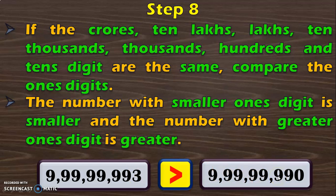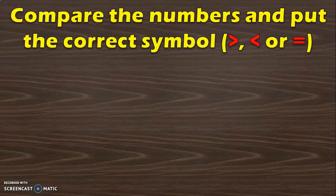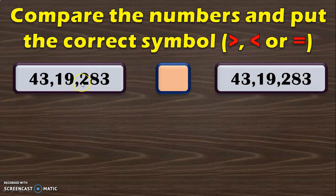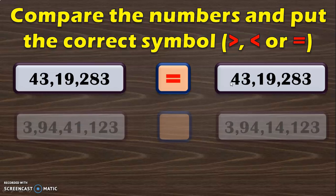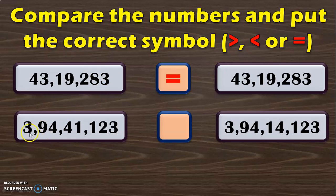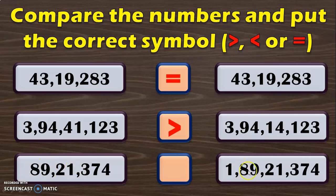Dear viewers, hope you are clear with the rules to compare the numbers. Only then you can put the correct symbols when you do the number activity. Here you have two 7 digit numbers which are of the same value — the symbol to put is the equal to symbol because both numbers are equal. Next, you have two 8 digit numbers where the crore's place, 10 lakhs place, and lakhs place are the same. So compare the 10,000's place where you have 4 and 1. We know that 4 is greater than 1, and you conclude that 3 crore 94,41,123 is greater than 3 crore 94,14,123. For the example with a 7 digit number and an 8 digit number, an 8 digit number is always greater, so you put the lesser than symbol.